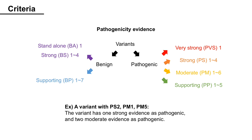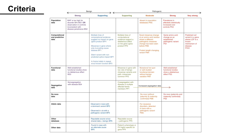For example, if a variant is assigned with PS2, PM1, and PM5, that means the variant has one strong evidence as pathogenic and two moderate evidence as pathogenic. This is the table that organizes each of the criteria by the type of evidence and strength. There are 28 types of evidence. Let's take a look one by one.